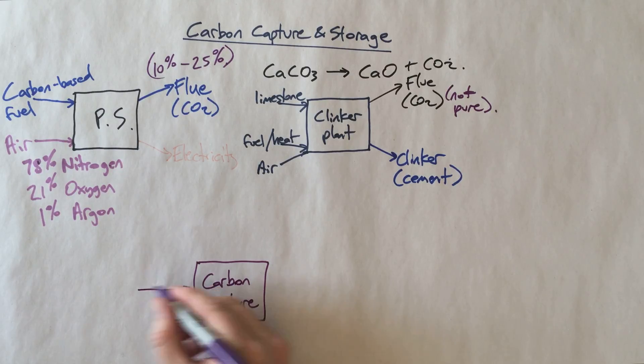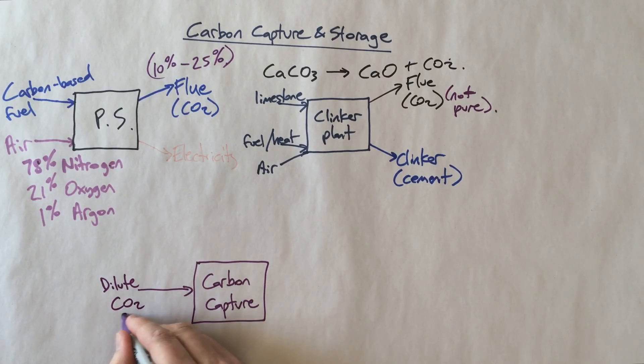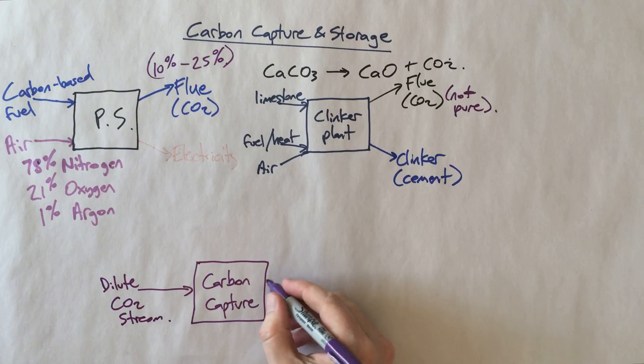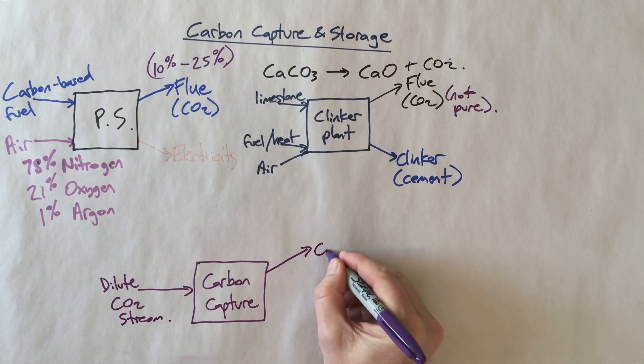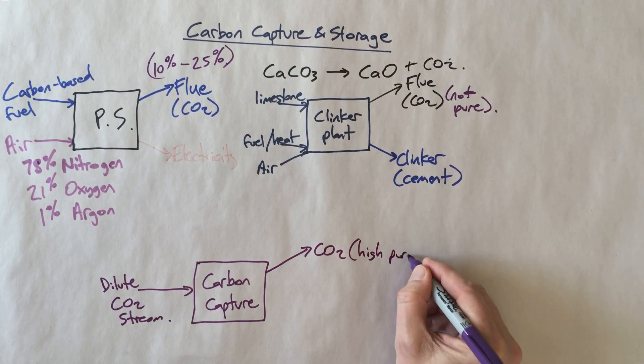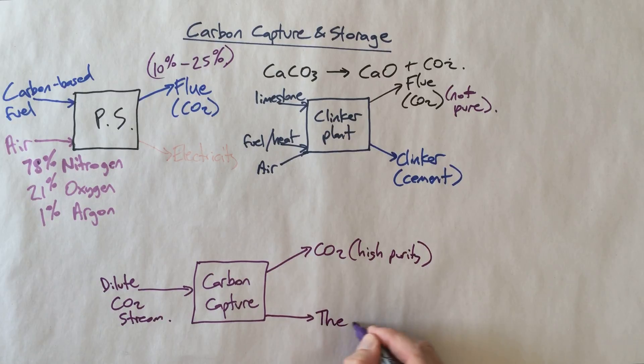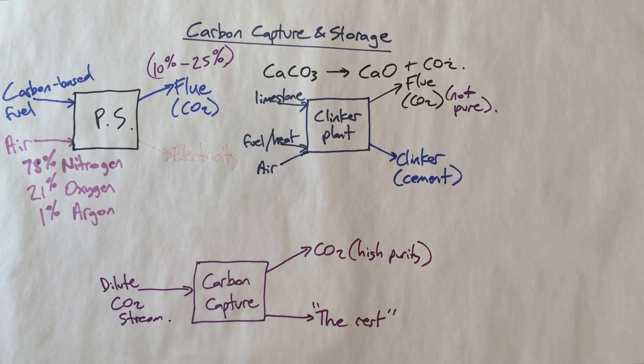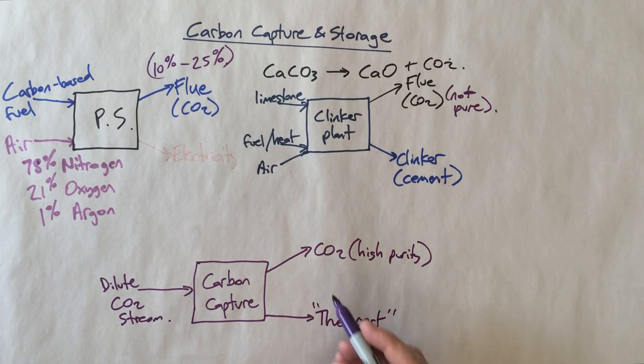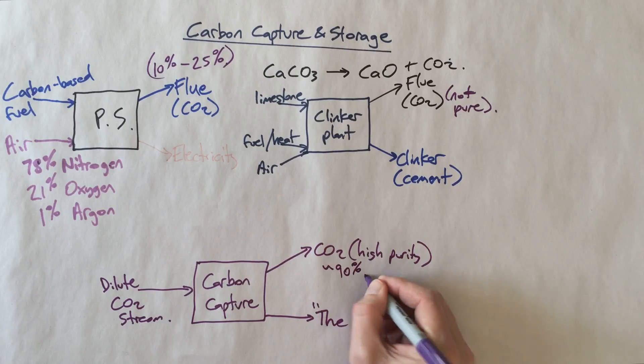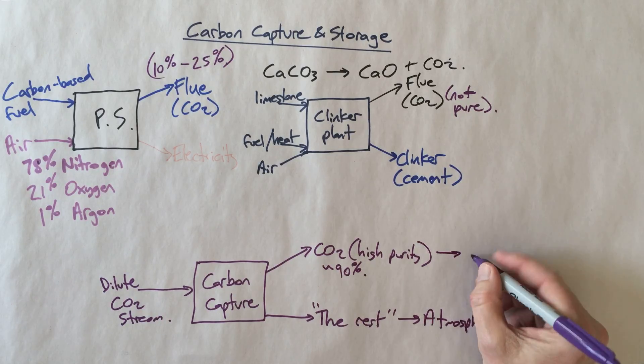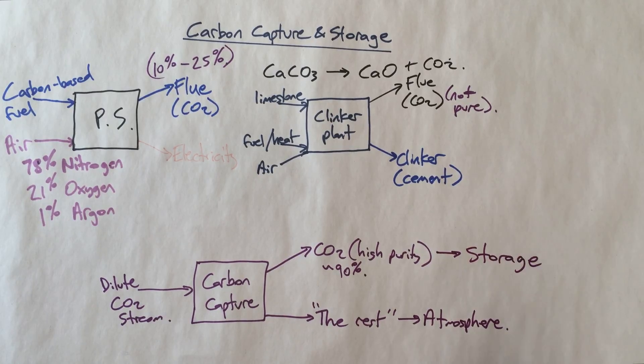But essentially what we're doing is we're taking a dilute CO2 stream, like from a power station, and then we are separating out a high purity CO2 stream. And I'll call this the rest. So whatever was left here. And ideally, the typical rule of thumb that people have been using is you want to get this CO2 stream to the order of 90% pure. And so what that would effectively mean is that we've taken our dilute CO2 stream, this rest, we can just put back to the atmosphere, because it's mostly nitrogen and argon, and it's harmless, and maybe some water as well. And this CO2 stream, we can then send off for storage, which I'll talk about in the next with a sharpie video.